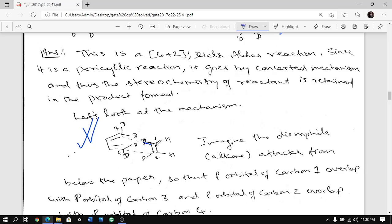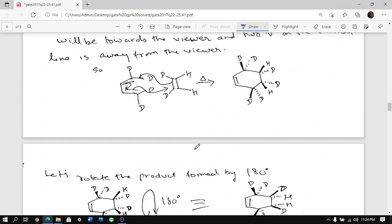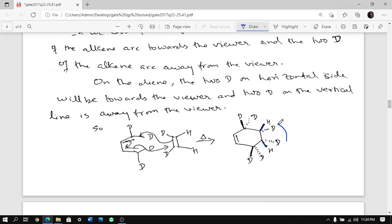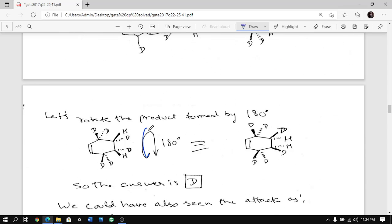Now let's look at the stereochemistry. Imagine if it is attacking from behind - it will push both of them towards the viewer. If you look from this side you will see that hydrogen is towards the viewer. Similarly these two deuterium are towards the viewer and these two deuterium are away from the viewer. These two hydrogen will be towards the viewer and these two deuterium will be away from the viewer. You get both hydrogen towards the viewer and both deuterium away from the viewer.